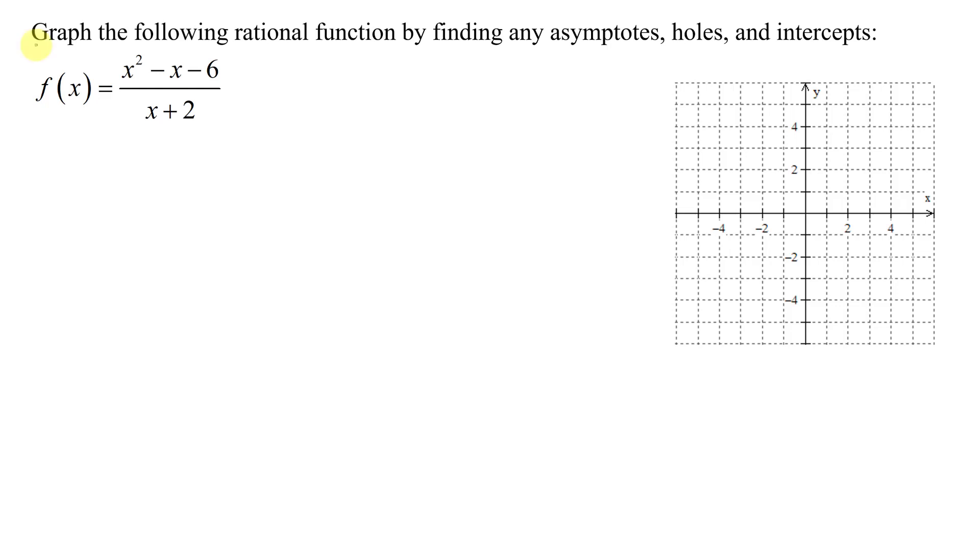In this example, I need to graph the following rational function by finding any asymptotes, holes, and intercepts. My function is f of x equals x squared minus x minus 6, all divided by the quantity x plus 2.